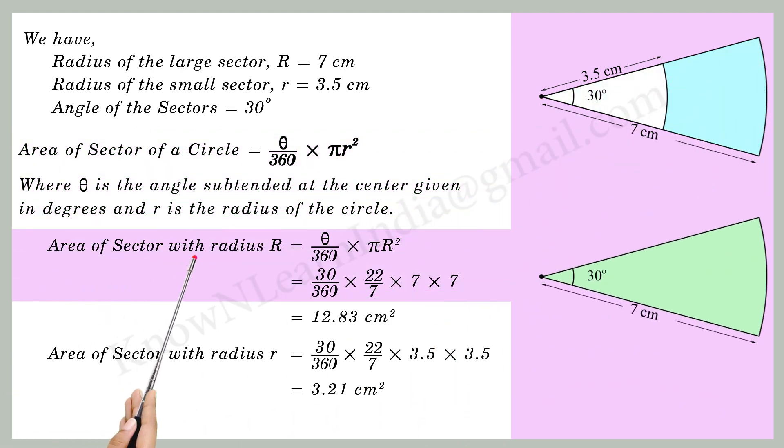Then area of the sector with radius capital R is equal to theta by 360 into pi R square is equal to 30 by 360 into 22 by 7 into 7 into 7 is equal to 12.83 cm square.